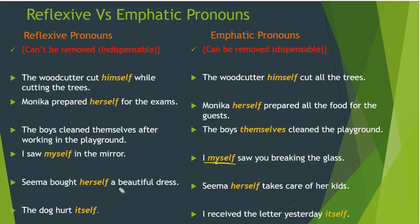'Seema bought herself a beautiful dress' — Seema bought a dress for herself. Without 'herself': 'Seema bought a beautiful dress' — we don't know for whom. Adding 'herself' tells us she bought it for herself — so 'herself' is a reflexive pronoun here. In contrast: 'Seema herself takes care of her kids' — here 'herself' emphasizes 'Seema', meaning she personally takes care of her kids. So 'herself' is an emphatic pronoun in this sentence.